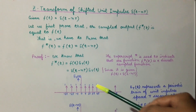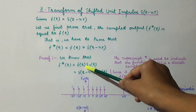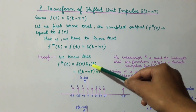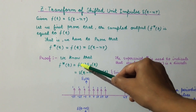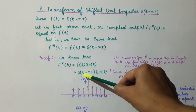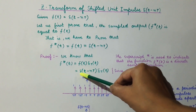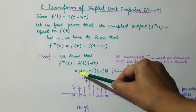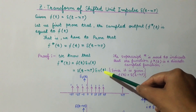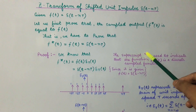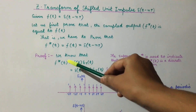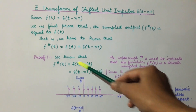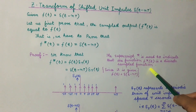From the equation f*(t) = f(t) · δ_T(t), we substitute the value of f(t) which is equal to delta(t - nT), so that f*(t) will be equal to delta(t - nT) · δ_T(t). The superscript star is used to indicate that f*(t) is a discrete sampled function, and we find out the Z transform of a discrete sampled function.